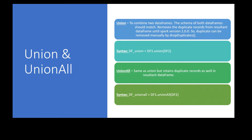Let us see the syntax for union. For union, it starts with the first data frame: df1.union(), and we need to pass the second data frame as a parameter. This function would merge all the records from df1 and df2 and create the resultant data frame df_union.